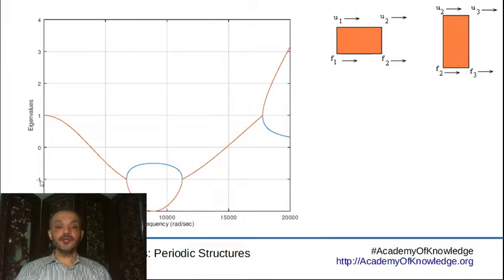Here, if we change the excitation frequency from zero to 20,000 radians per second, this is how the eigenvalues will change. Notice the similarity between this model and the one we got for the alternating mass spring systems, basically because what we have here is a three degree of freedom system also.